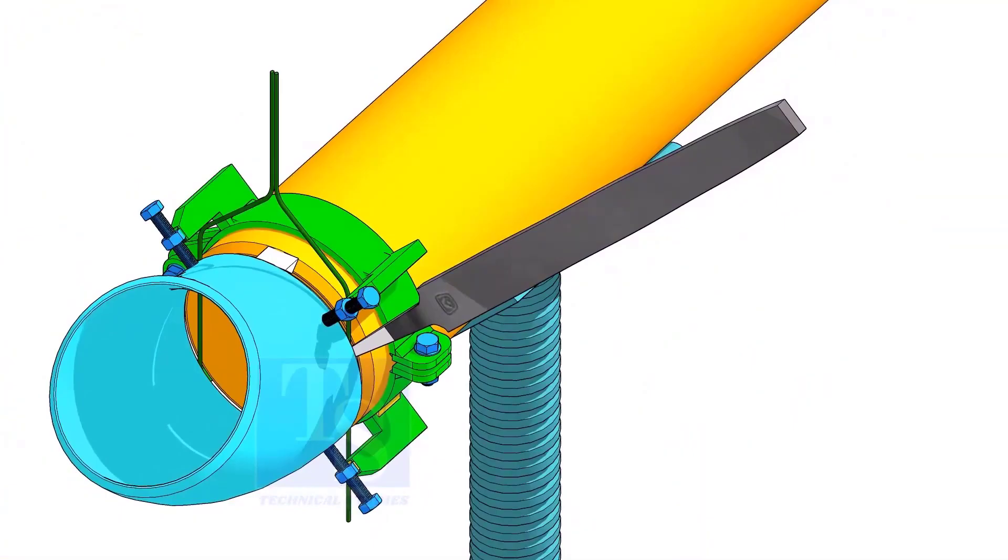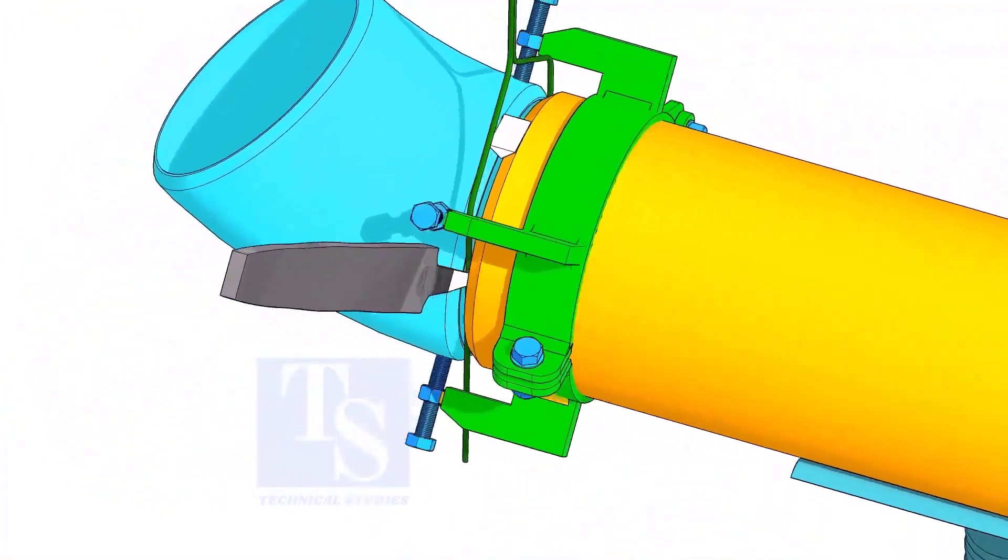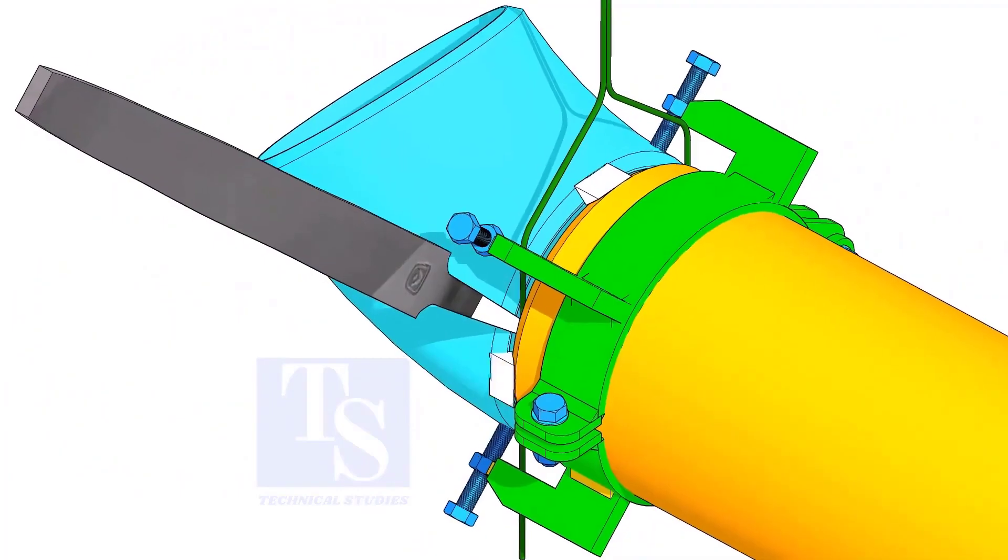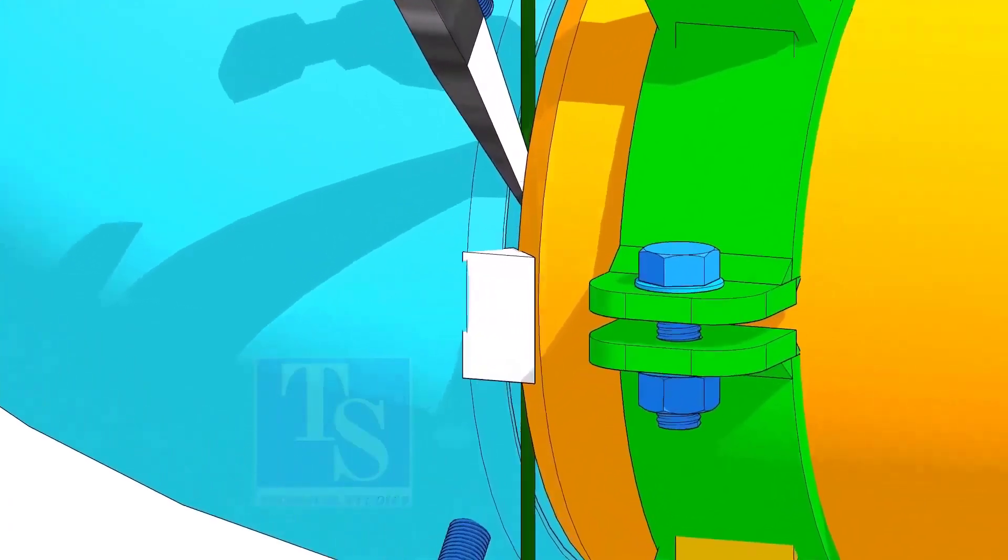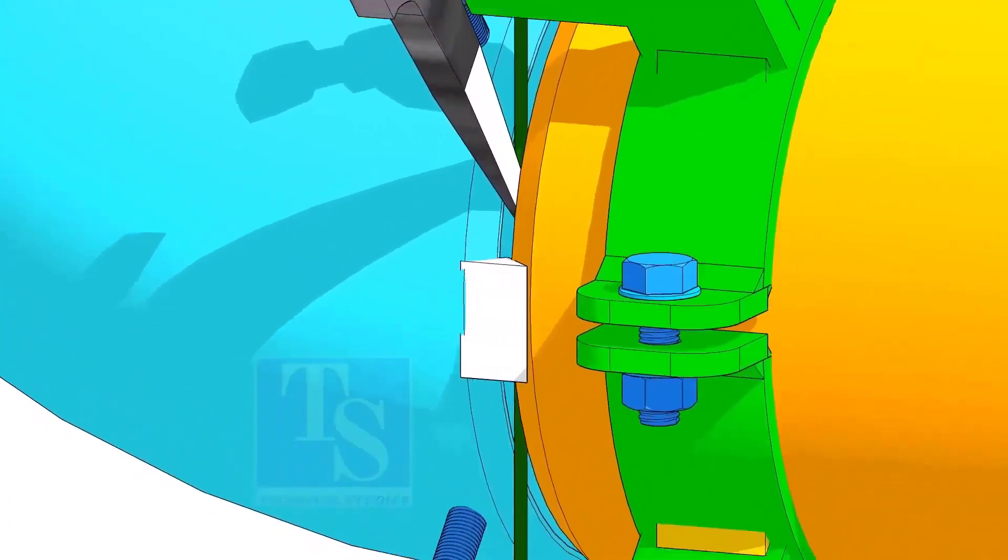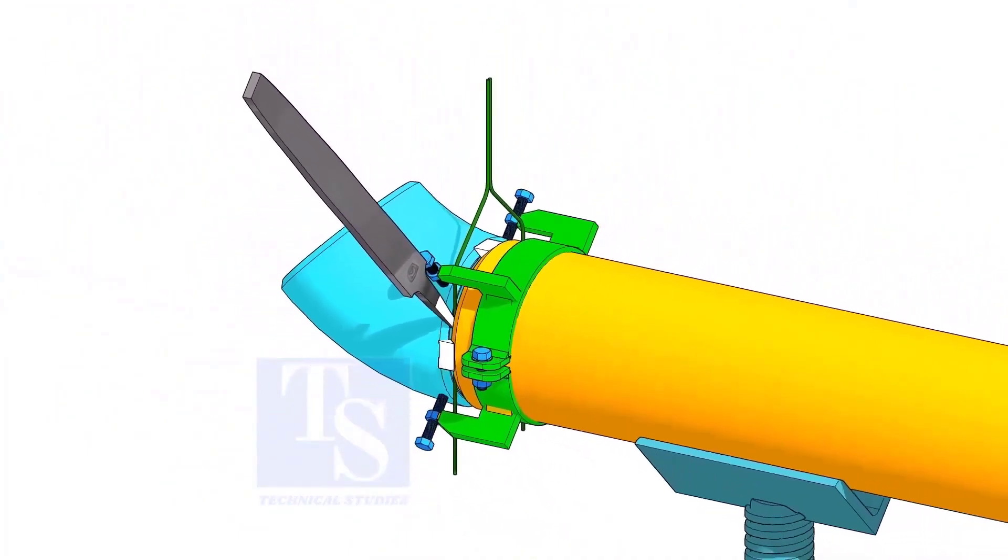You would have observed after a tack weld, the fittings come closer and the gap reduces. Hold the file end in the joint as shown. This will prevent the fittings coming closer. Thank you for watching.